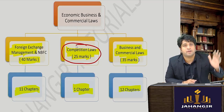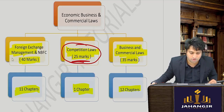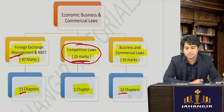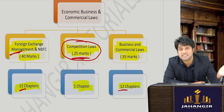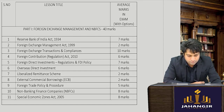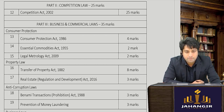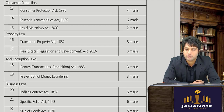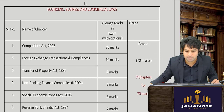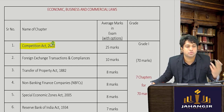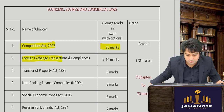In EBCL, FEMA (Foreign Exchange) carries 11 marks and the other 12 chapters involve basic repetitive and some situational questions from Part C. Breaking it into Grade A, B, and C: the Competition Act — one chapter — you should master, as it is 25 marks. FEMA comes at around 10 marks and is very important.